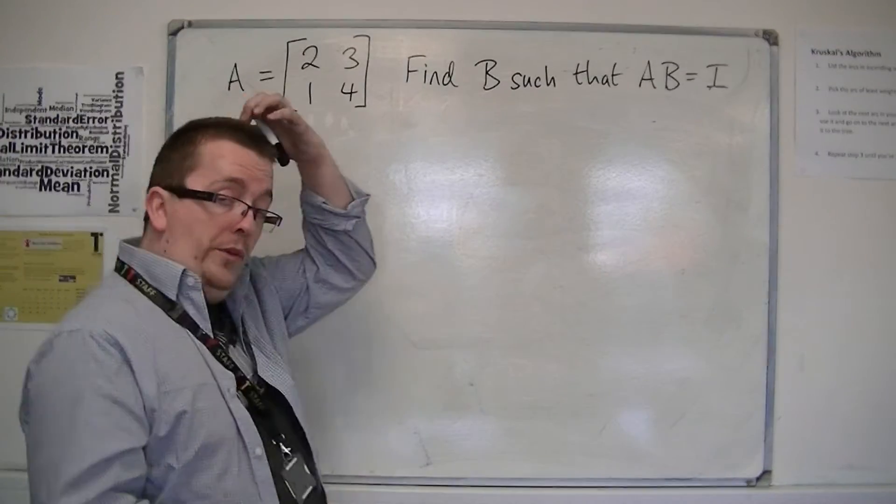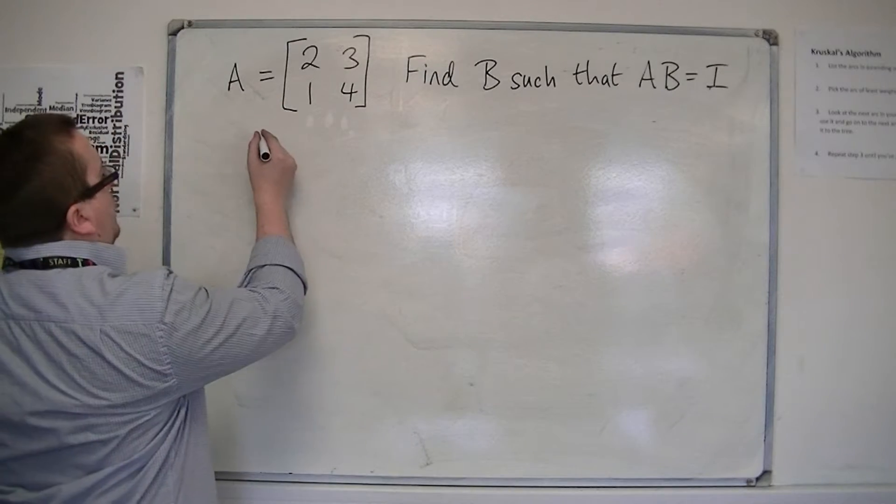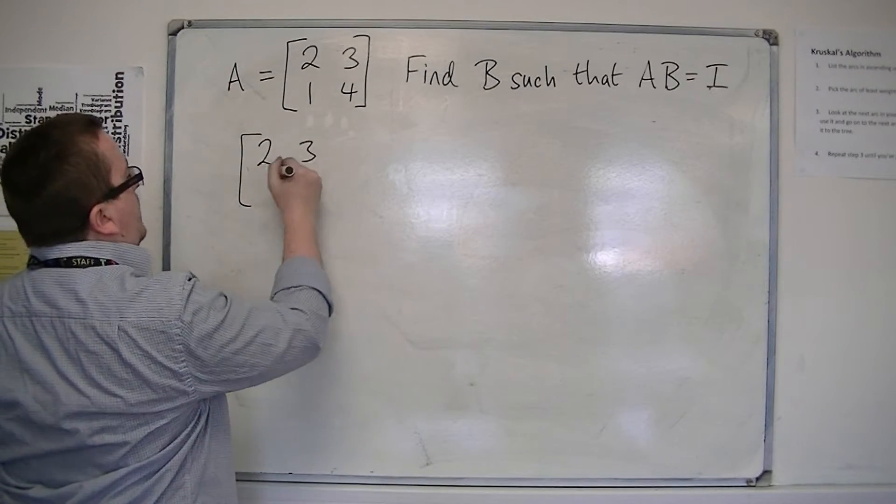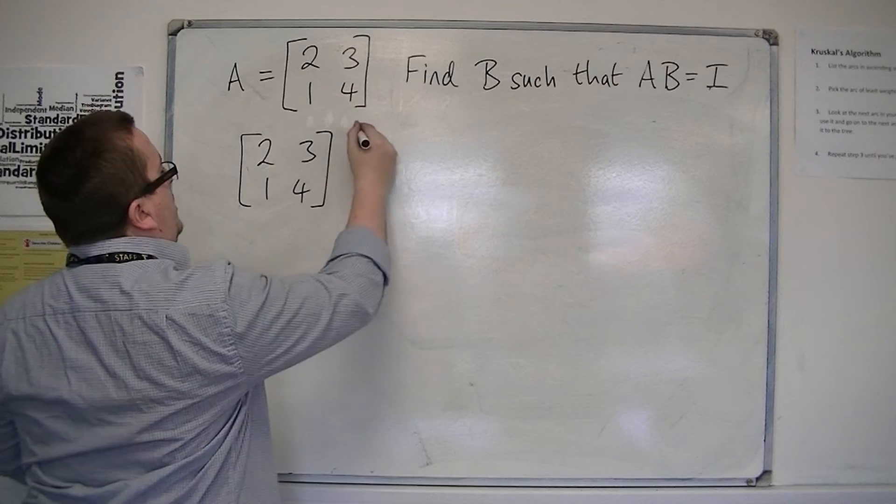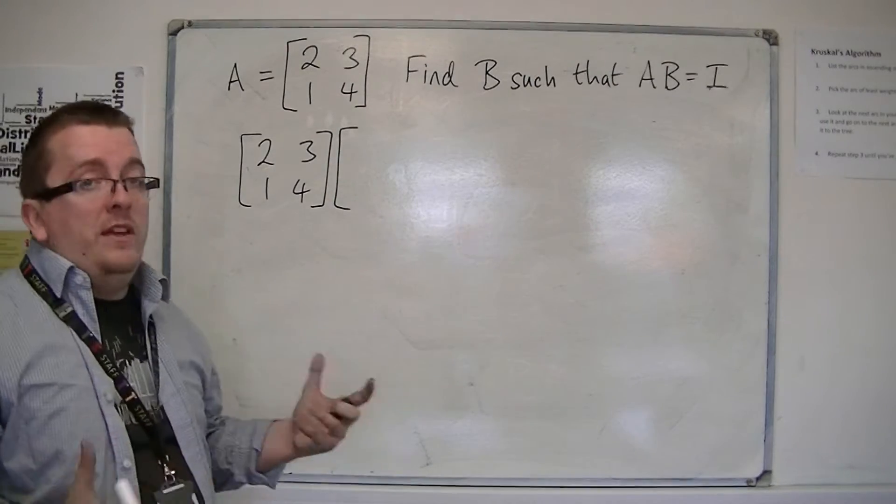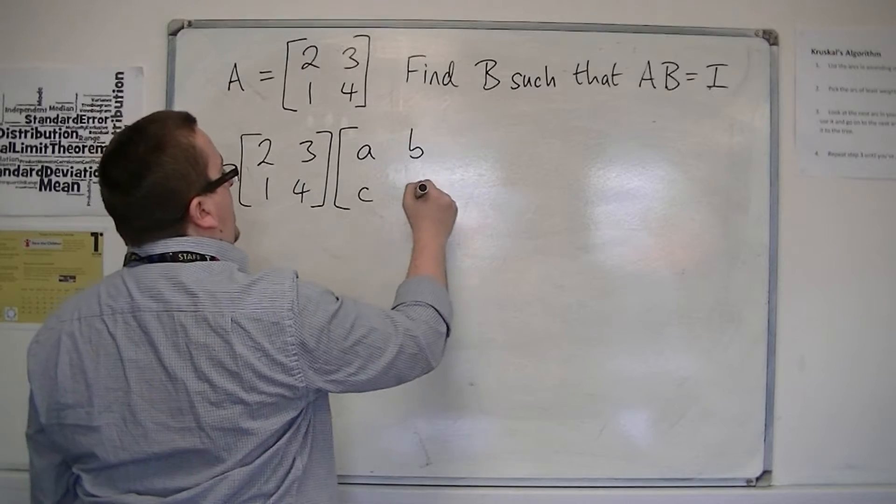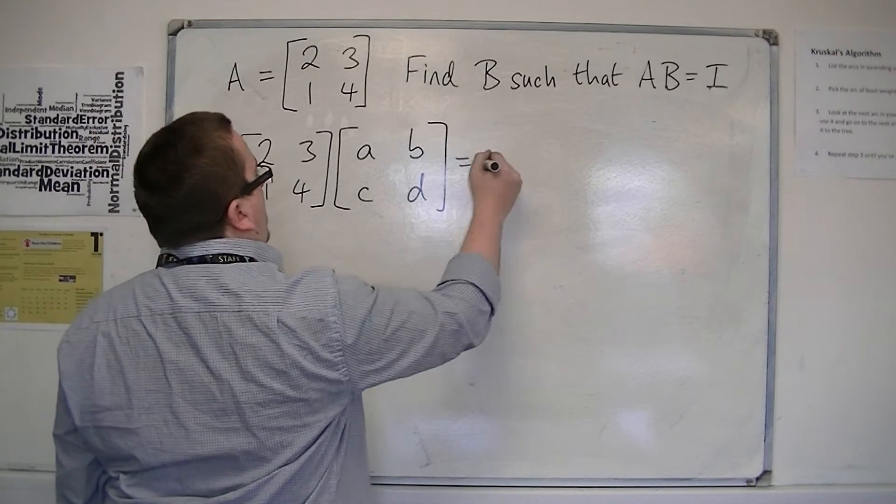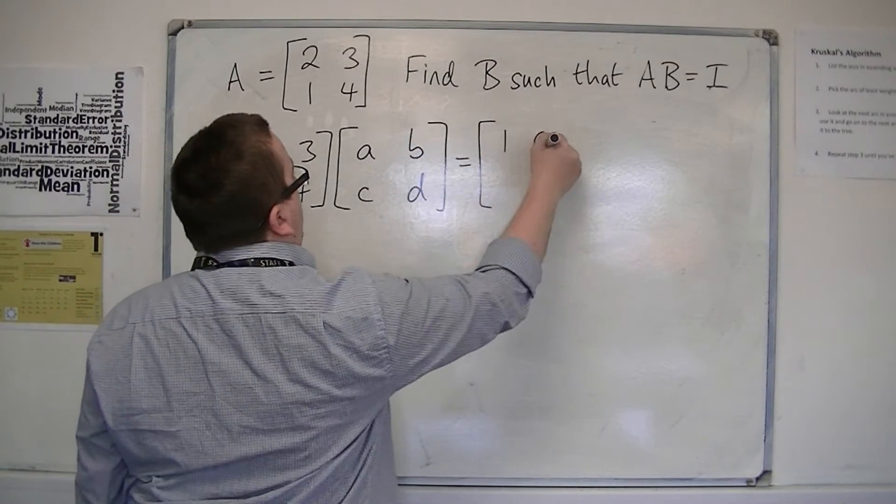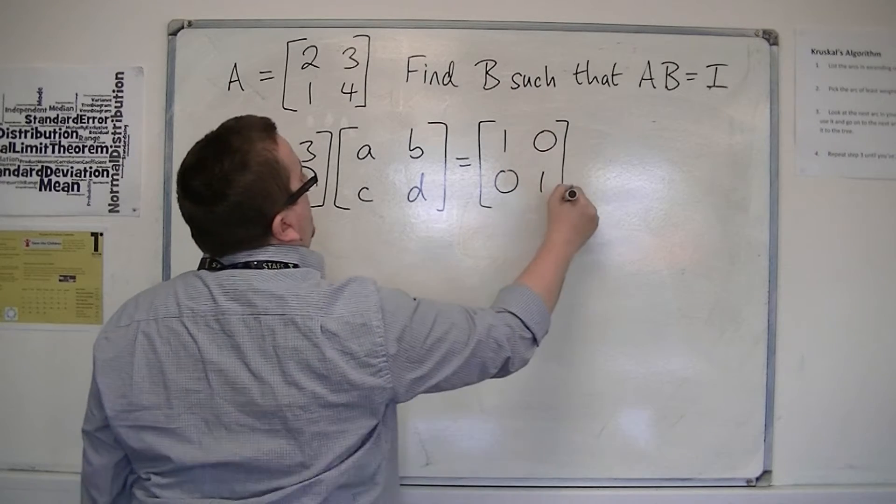So effectively what we're saying is that I want to multiply [2, 3; 1, 4] by a matrix B. I don't know any of the elements, so let's call them a, b, c, and d. When I multiply them together I get the identity matrix [1, 0; 0, 1].